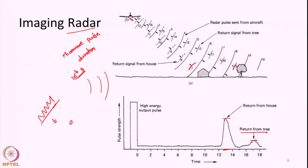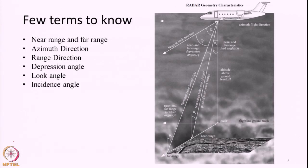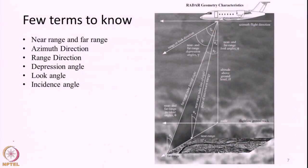Essentially a radar is a distance measuring device. It measures distance in order to map the surface underneath it. It calculates the distance based on the time taken for electromagnetic radiation to travel from the point of origin to the point of reflection and back. Before moving further into imaging radar concepts, we will first get introduced to a few terminologies used in active microwave remote sensing.